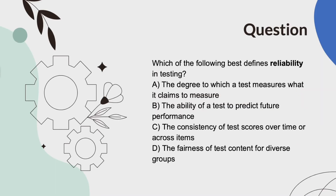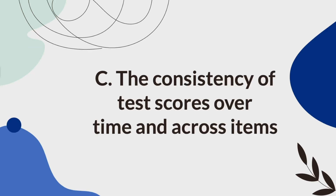Which of the following best defines reliability in testing? A, the degree to which a test measures what it claims to measure. B, the ability of a test to predict future performance. C, the consistency of test scores over time or across items. Or D, the fairness of test content for diverse groups. And the answer is C, the consistency of test scores over time and across items.